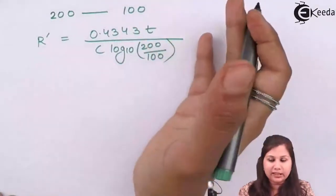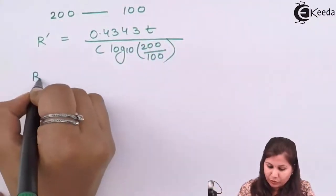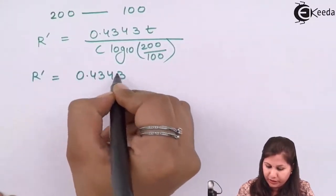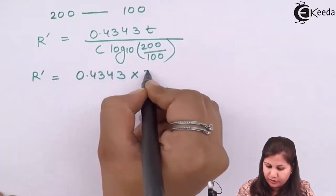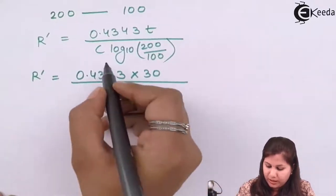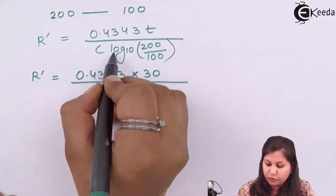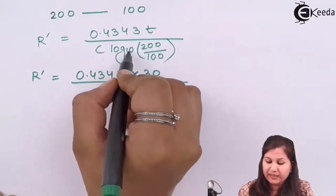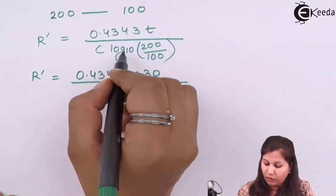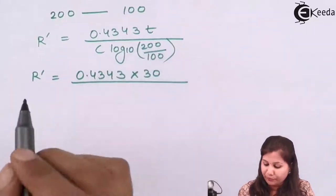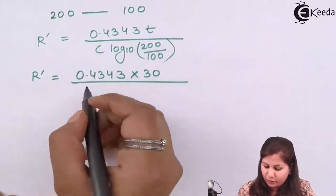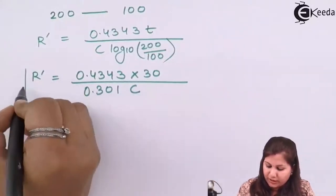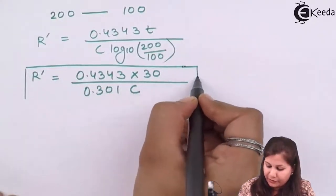With t = 30 seconds and log₁₀(200/100) = log₁₀(2) = 0.301, we get R' = (0.4343 × 30) / (C × 0.301). This is the value of R', the equivalent parallel resistance.